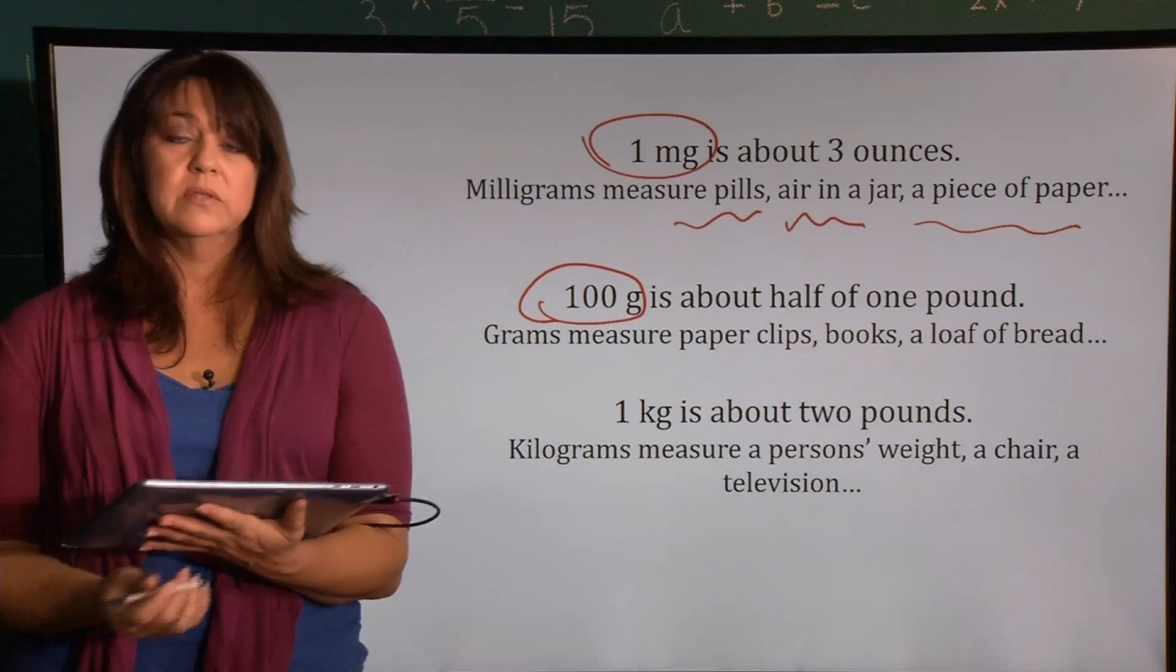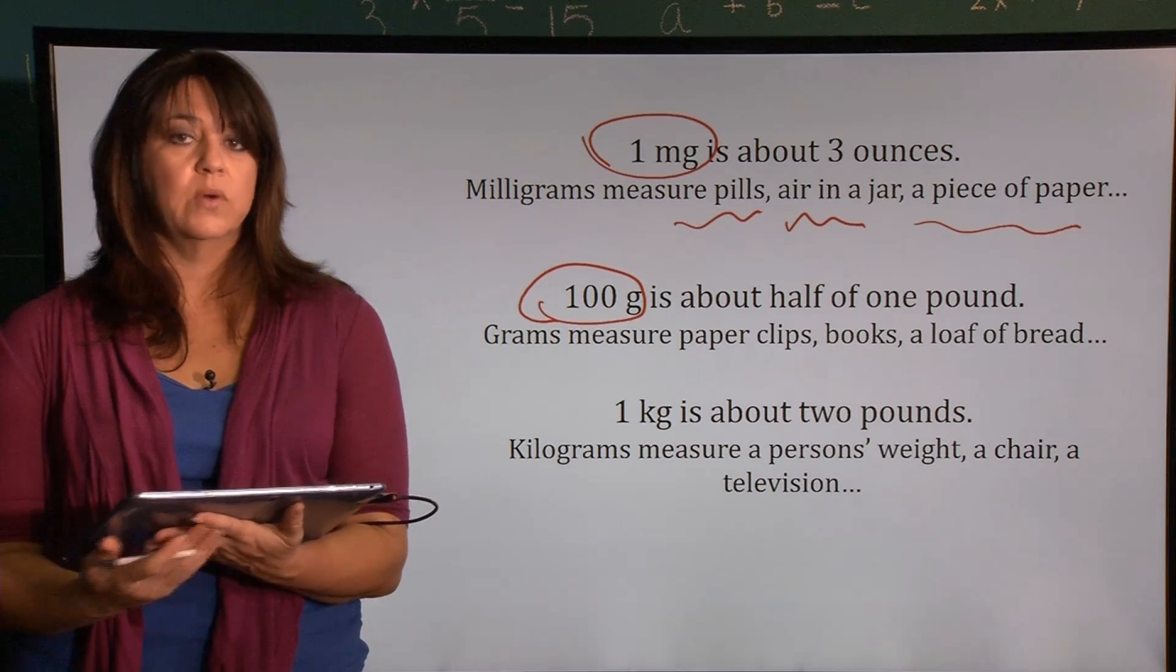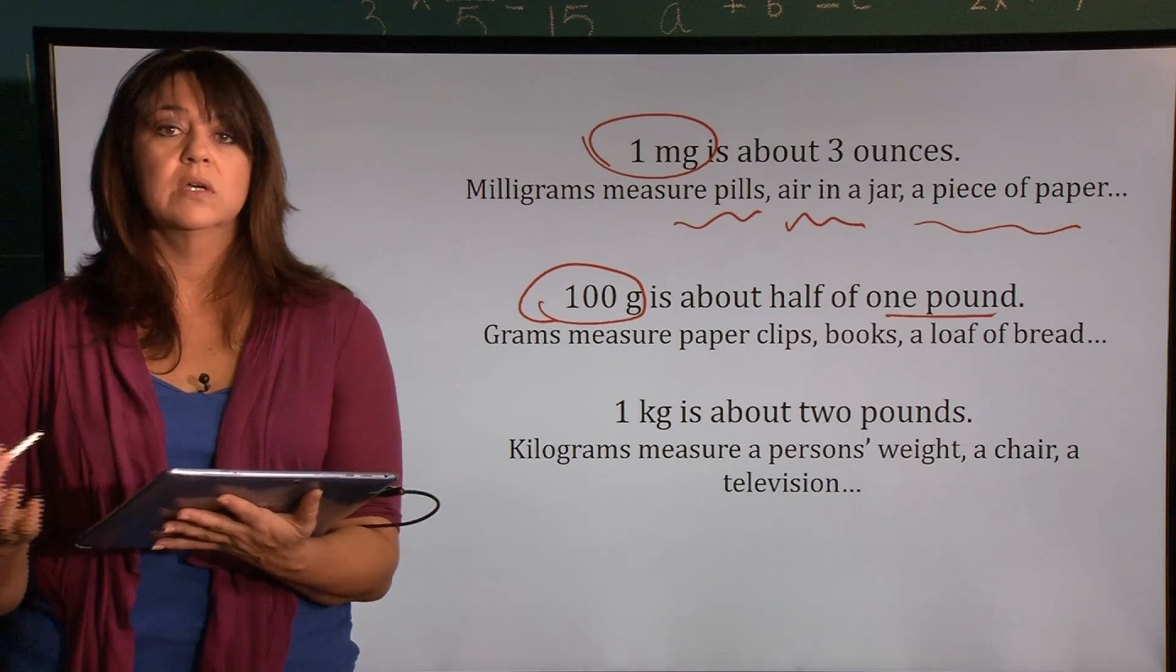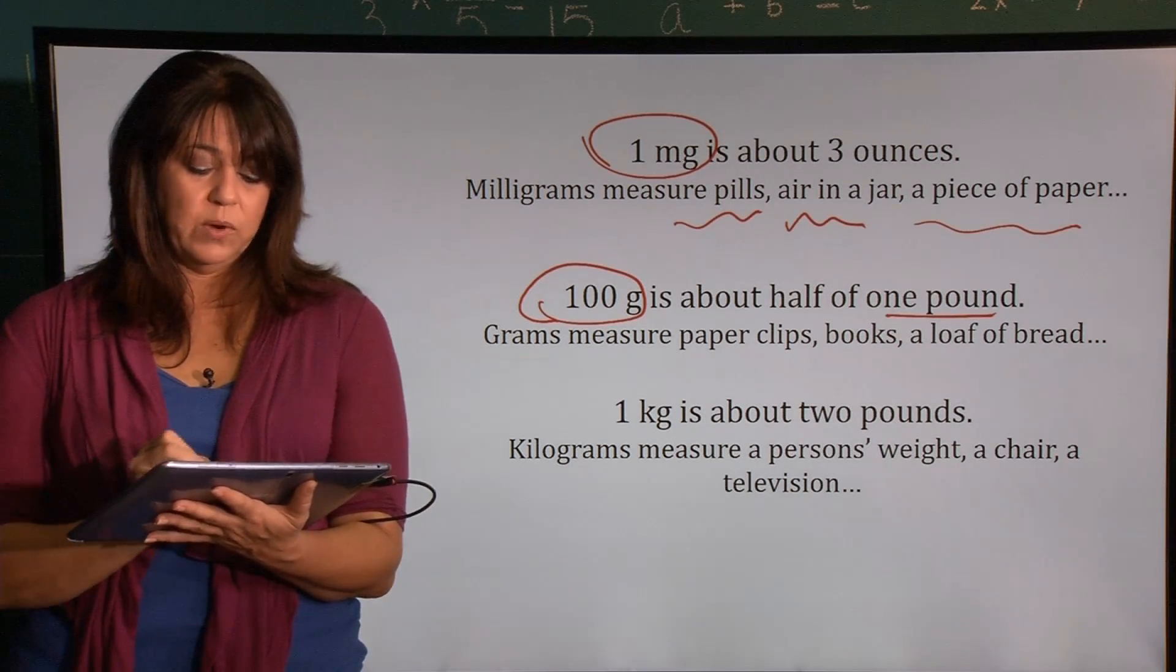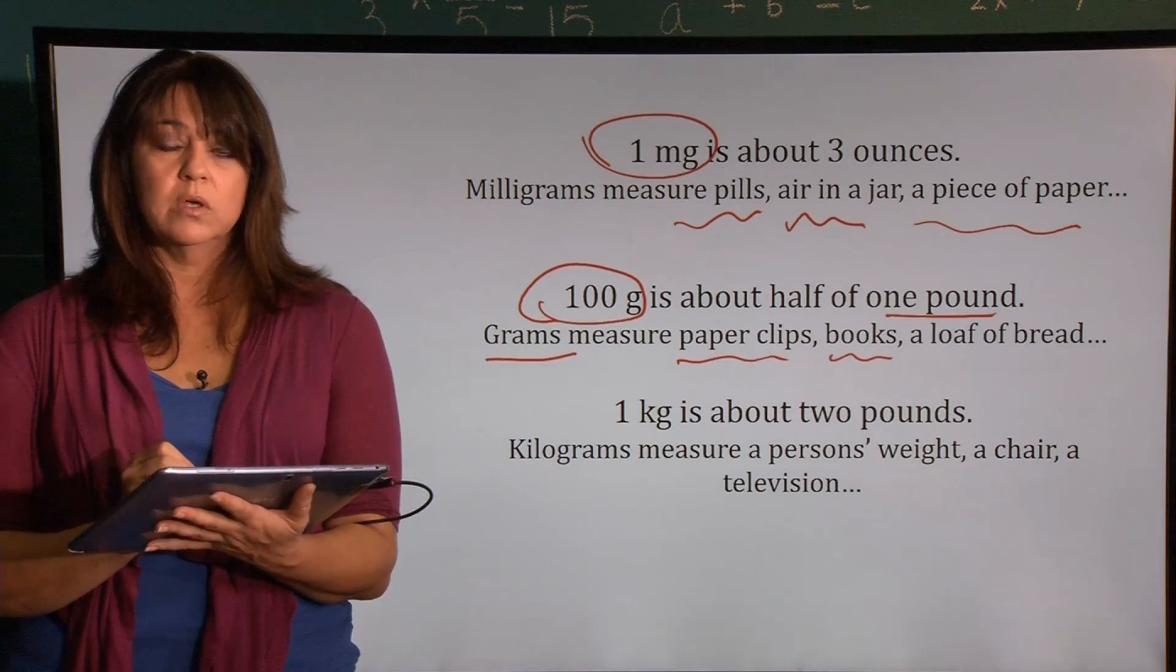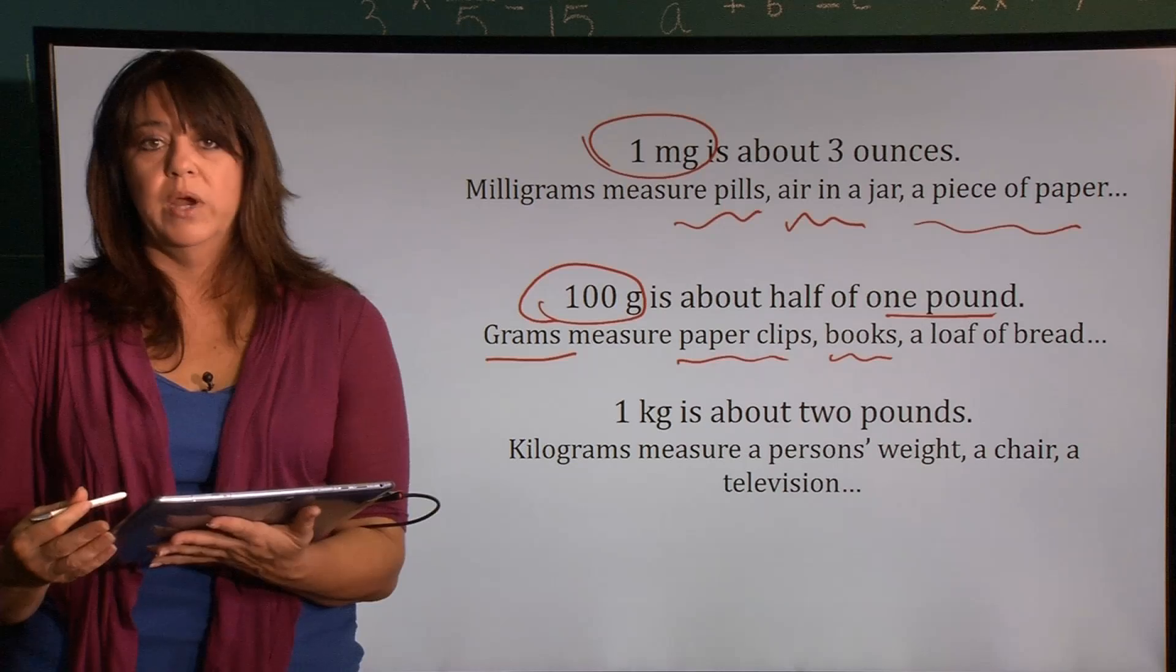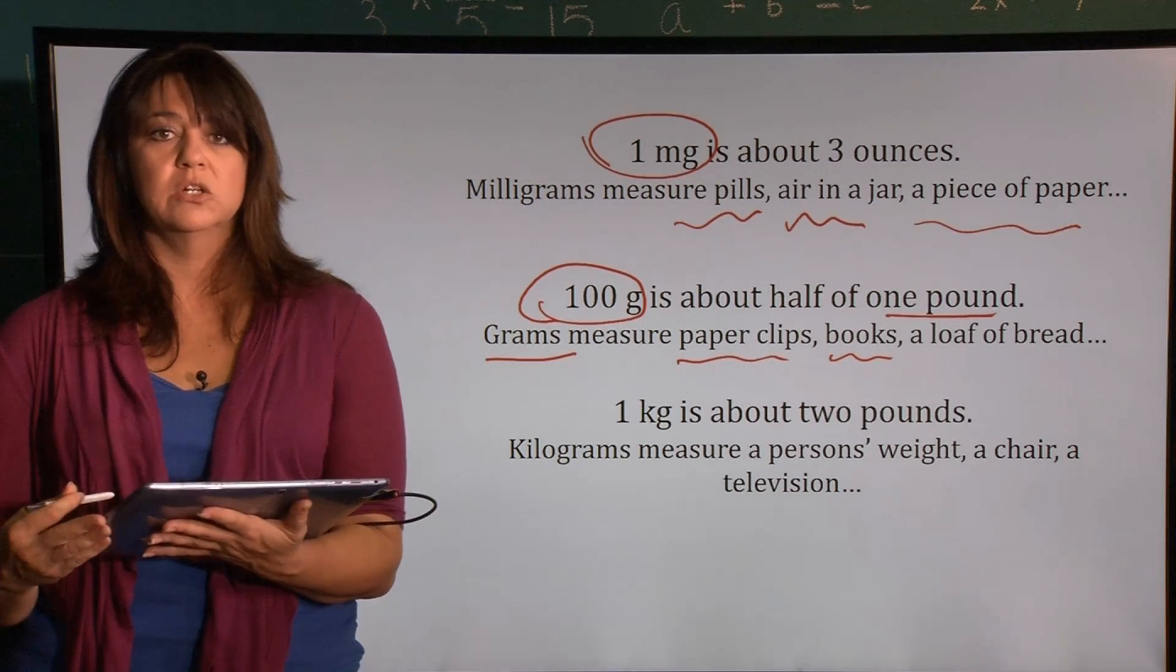One hundred grams is about half of one pound. So you need a lot of grams to add up to a customary U.S. measurement of weight. We would use grams to measure things like paper clips or the weight of a book or maybe a loaf of bread. Things that are light but larger are measured in grams.